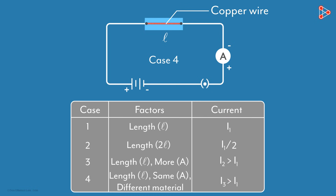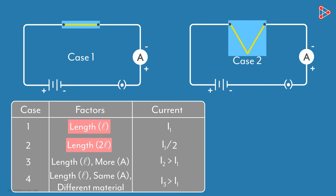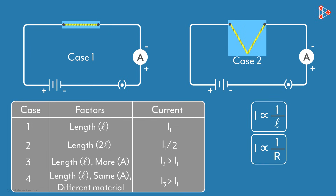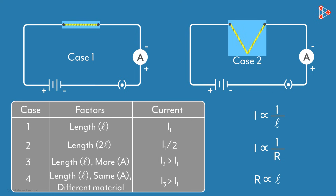Now let's understand the results case by case. We see that as the length of the wire increases, the current reduces by the same factor. It implies that the current is inversely proportional to the length of the wire. And by Ohm's law, we know that the current is inversely proportional to the resistance of the conductor. So these two together imply that the resistance R is directly proportional to the length of the wire. More the length of the wire, more will be the resistance.